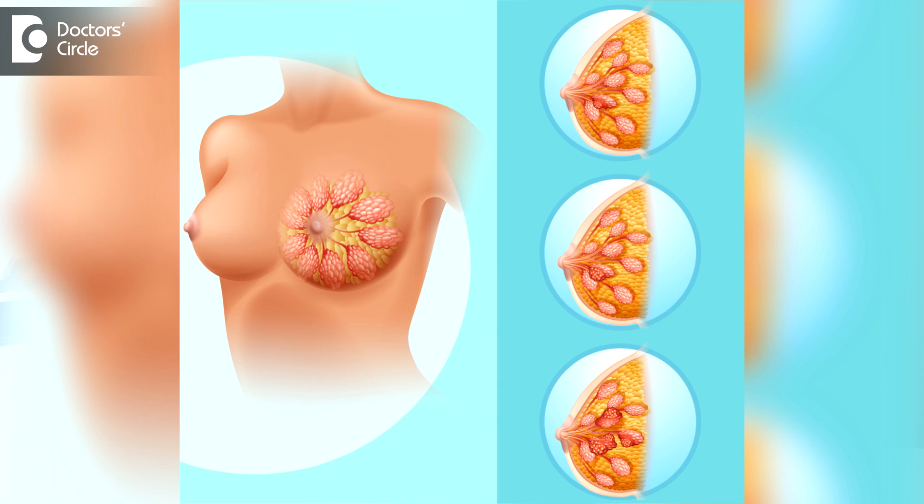Breasts can have lumps in any age group. In younger age groups between 15 and 30, we very often see what is called a cyst in the breast, but of late, cysts in the breast are common in any age group. Cysts in the breast are normally arising from the breast cells itself. The breast is a system of lobules and ducts, and these lobules are nothing but a bunch of grapes.